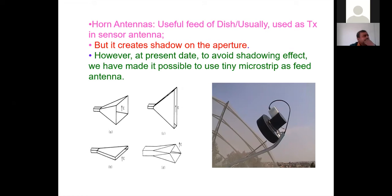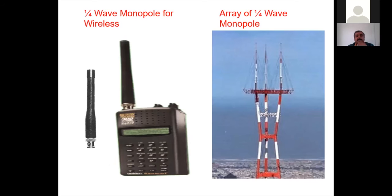Among printed antennas, the most reliable geometries are rectangular and circular microstrip patch antennas. Whenever industry tries to use antennas in production, these well-established geometries are preferred. That is why circular and rectangular patches are very important as planar antennas.